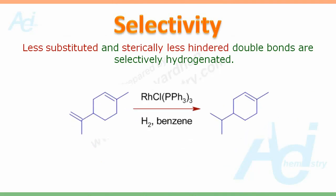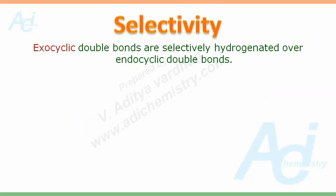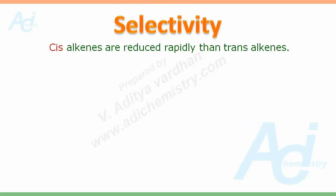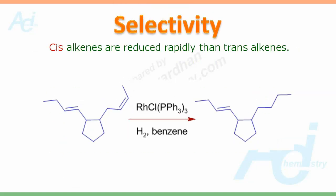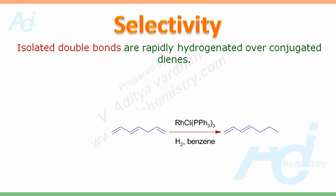For example, less substituted and sterically less hindered double bonds are selectively hydrogenated. Exocyclic double bonds are selectively hydrogenated over endocyclic double bonds. Cis-alkenes are reduced more rapidly than trans-alkenes. Isolated double bonds are rapidly hydrogenated over conjugated dienes.